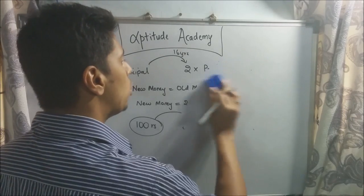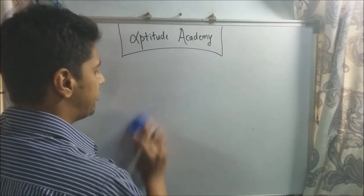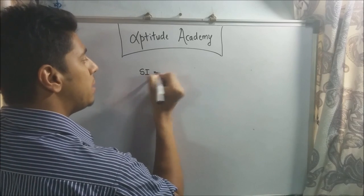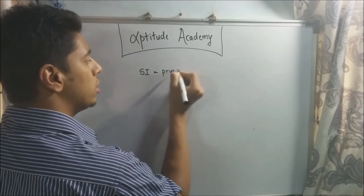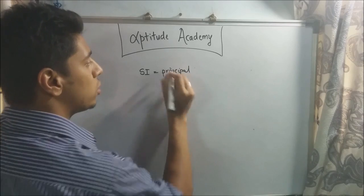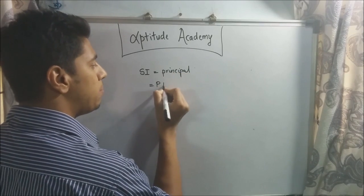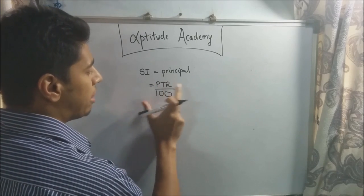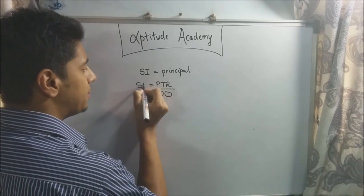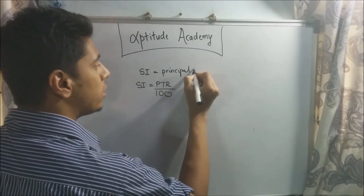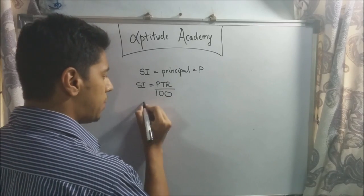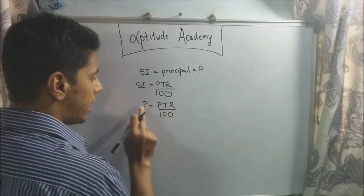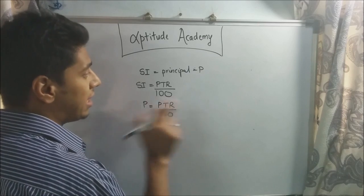All right. Now, to approach this problem, it's just a simple trick with the formula itself. We know that SI should be equal to the principal amount if you want it to double. Now, we also know SI equals PTR upon 100—Principal, time, and rate. But SI is equal to P. So P equals PTR upon 100. P is your SI, that is the only way it will double.